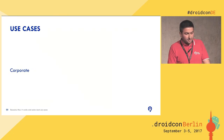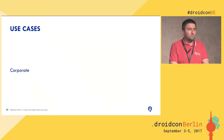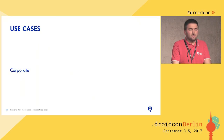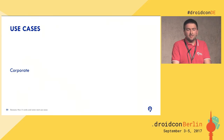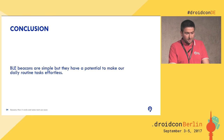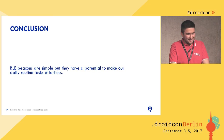The last use case is corporate, and this is interesting for all of you. You can put beacons inside conference rooms and get notifications when you enter a room or check availability. Some companies attach small beacons to laptops and projectors so that if they get lost somewhere in the building, they can be found easily.